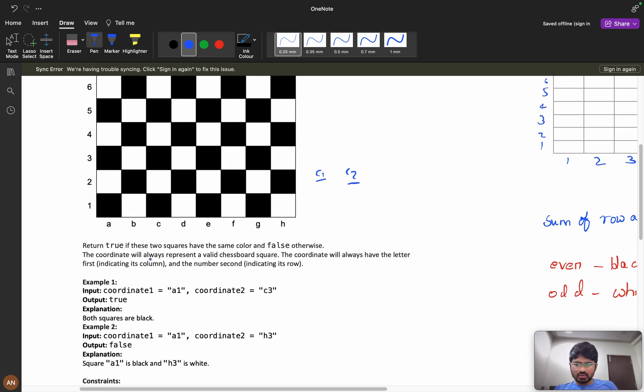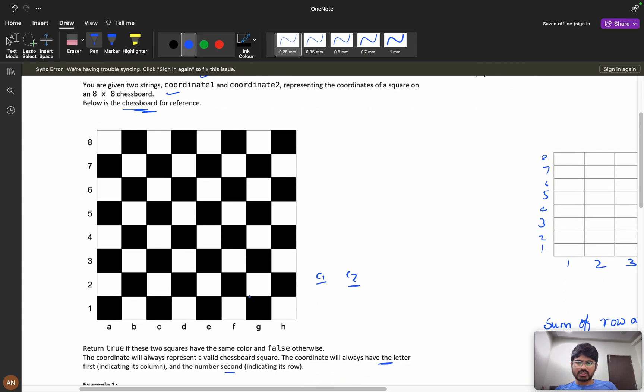The coordinate will always represent a valid chessboard square. The coordinates will always have the letter first and the number second. So this is the question. I think you have got the question, so we will observe now.